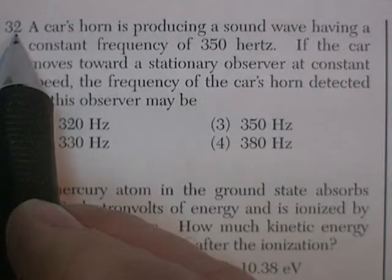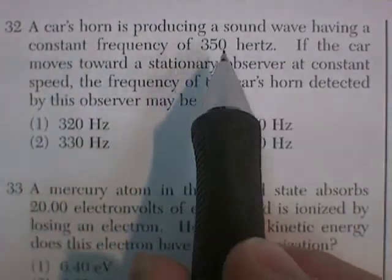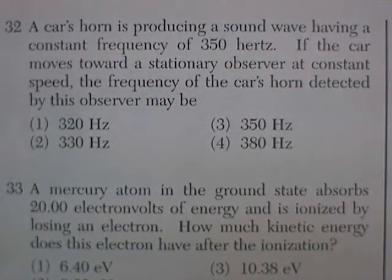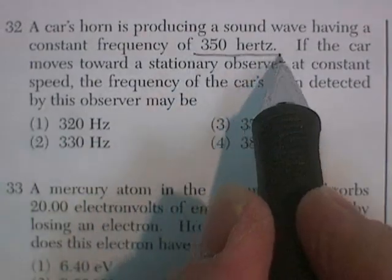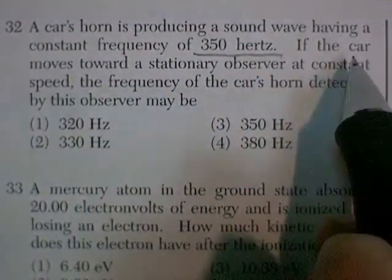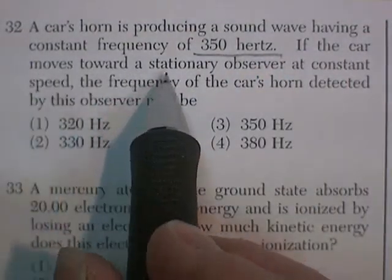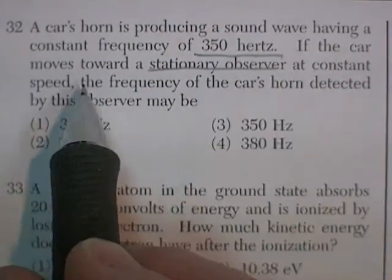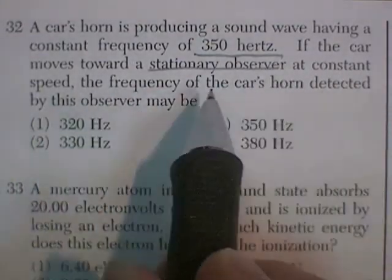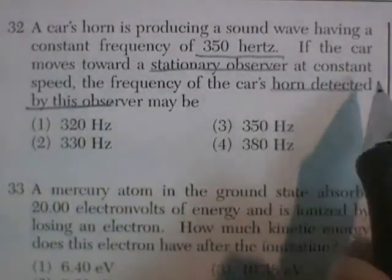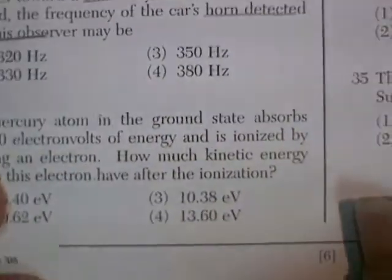Question 32. The car's horn is producing a sound wave having a constant frequency of 350 hertz. If the car moves towards the stationary observer at a constant speed, the frequency of the car's horn detected by the observer. Now, this is Doppler effect.